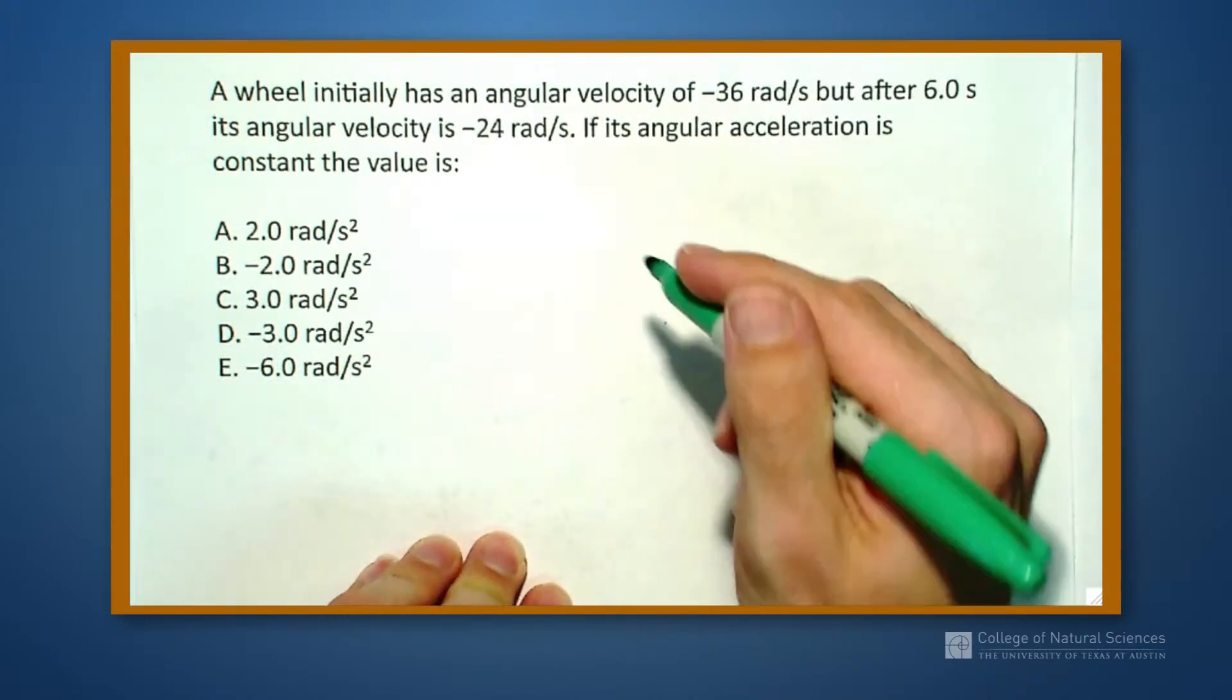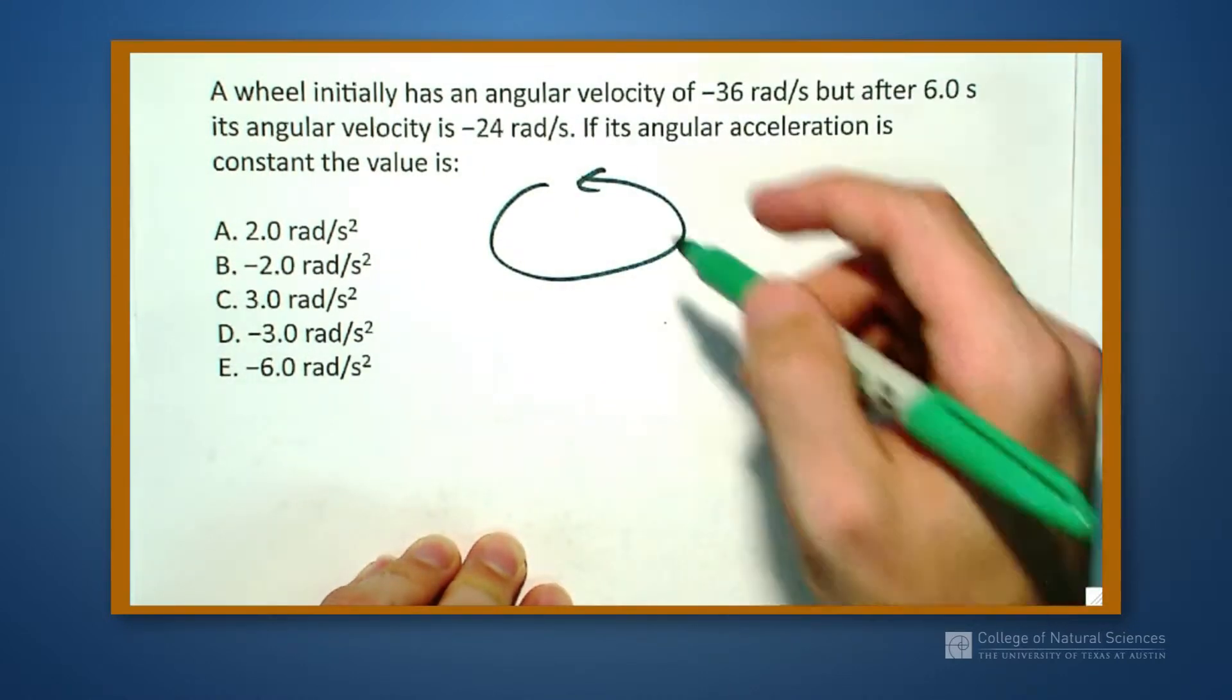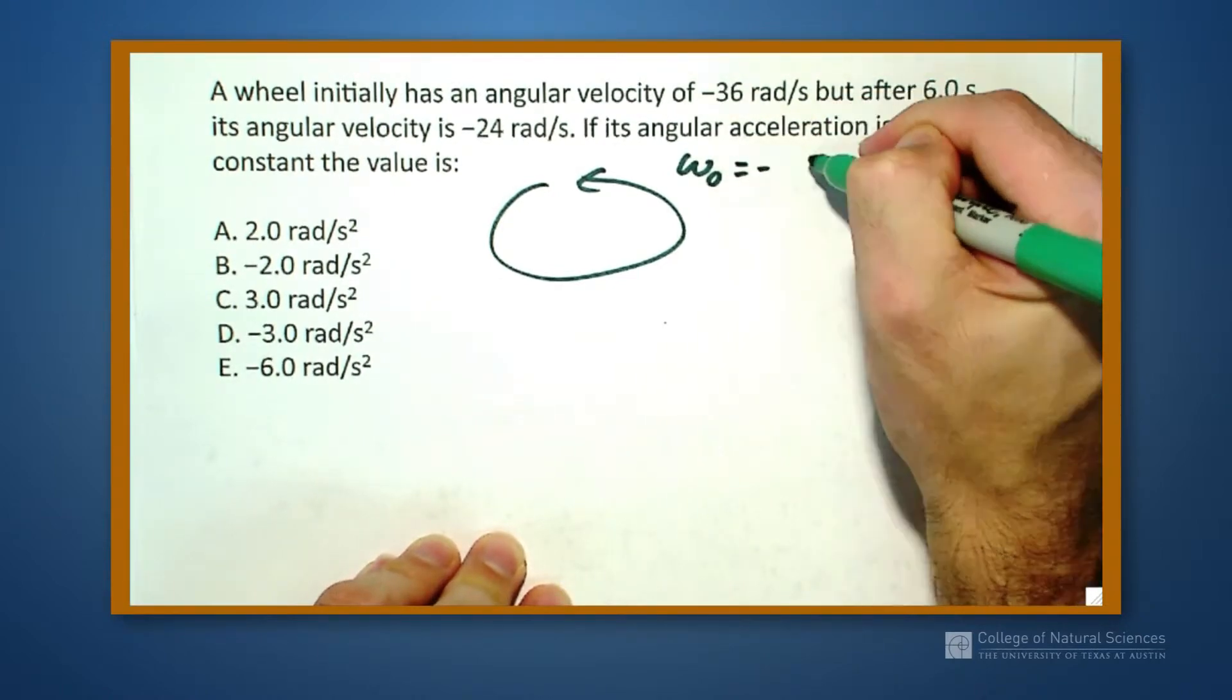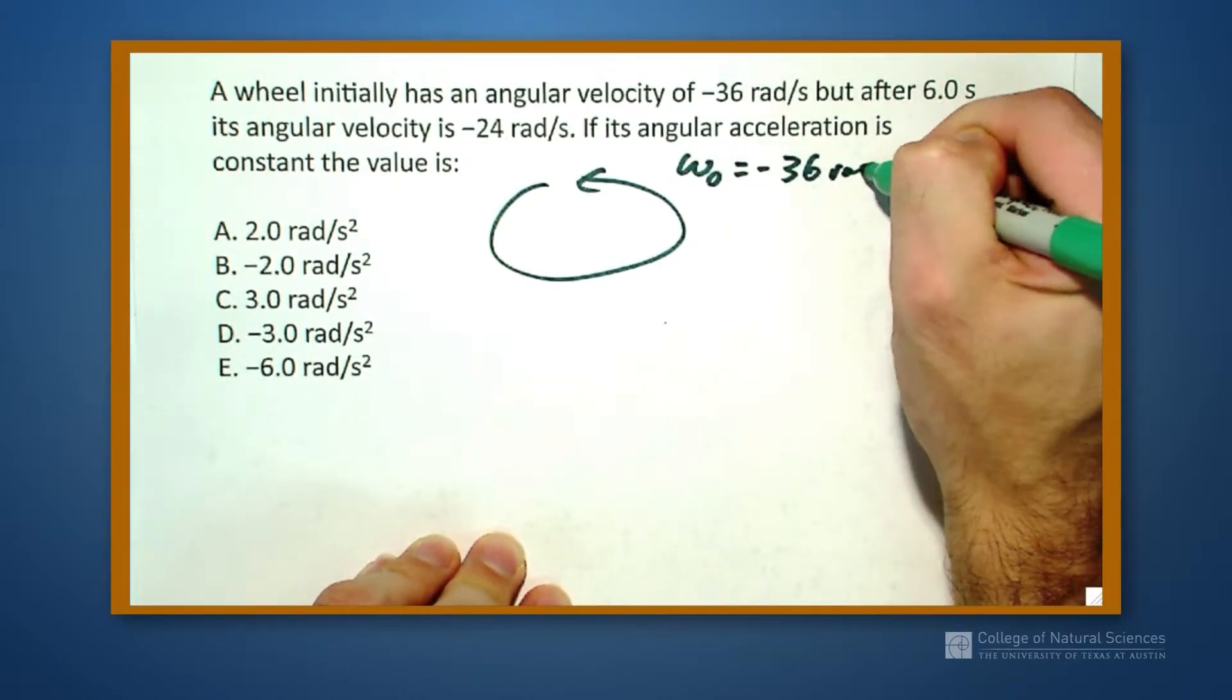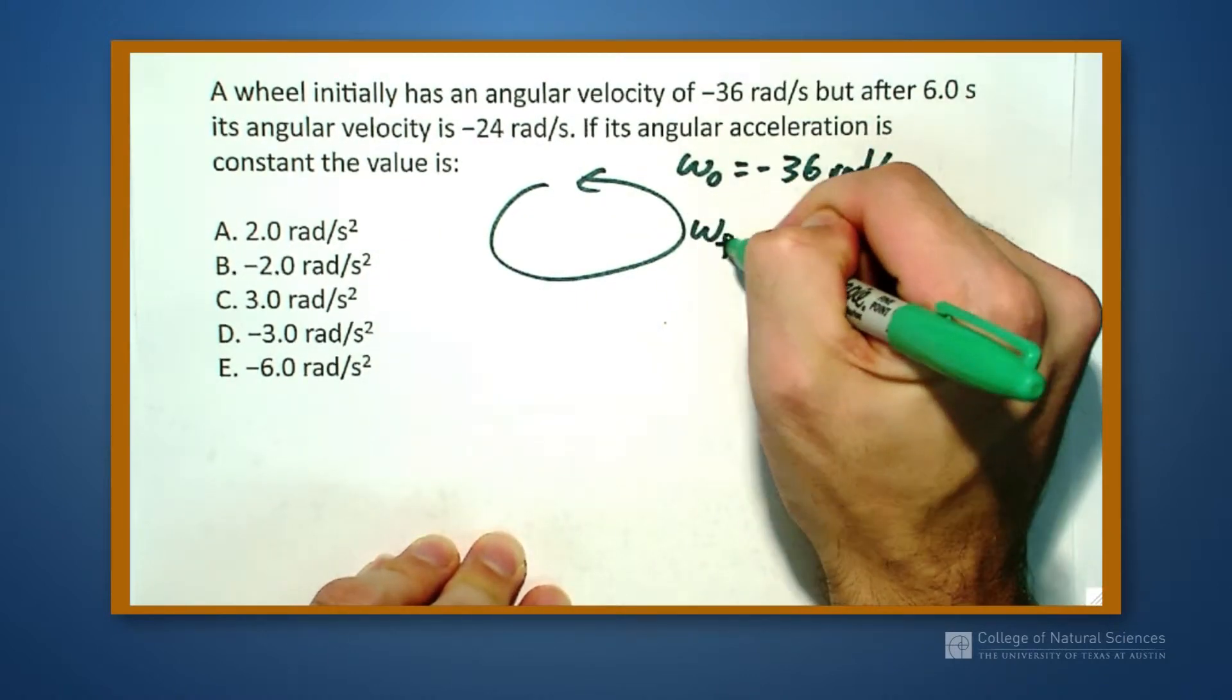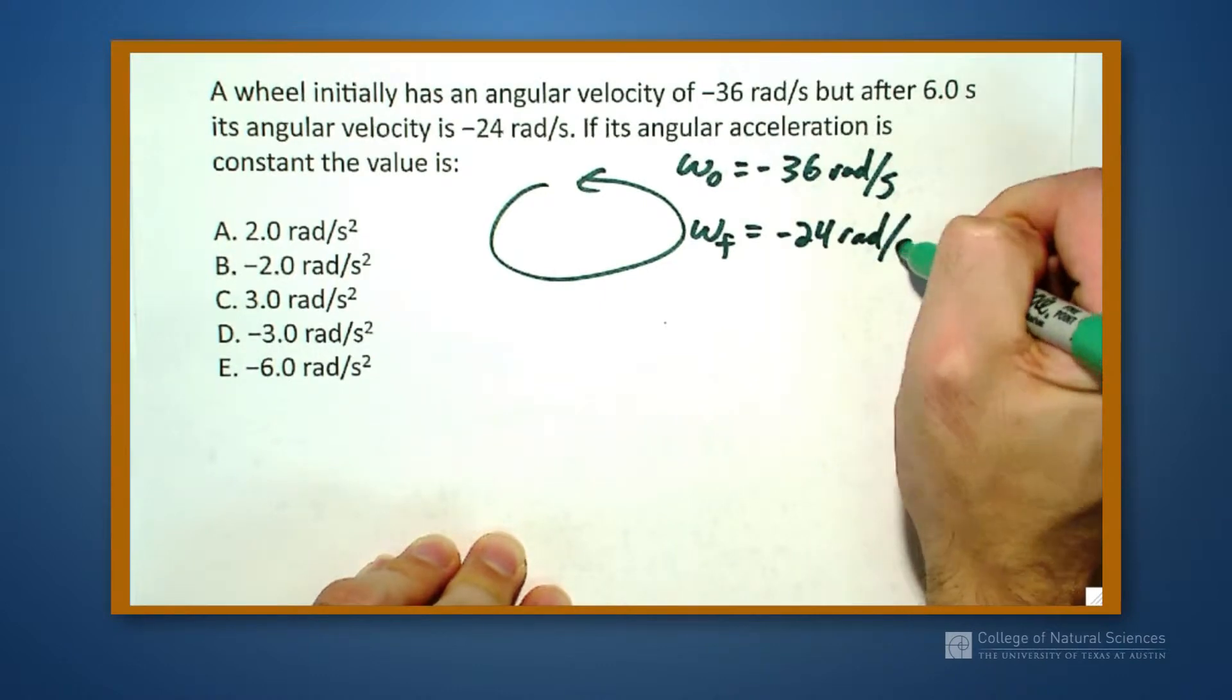Well, I have an object and it's going to be spinning around and it's going to start off with an initial omega naught equaling minus 36 radians per second. At some point later, I'm going to call that omega final, is going to be minus 24 radians per second.